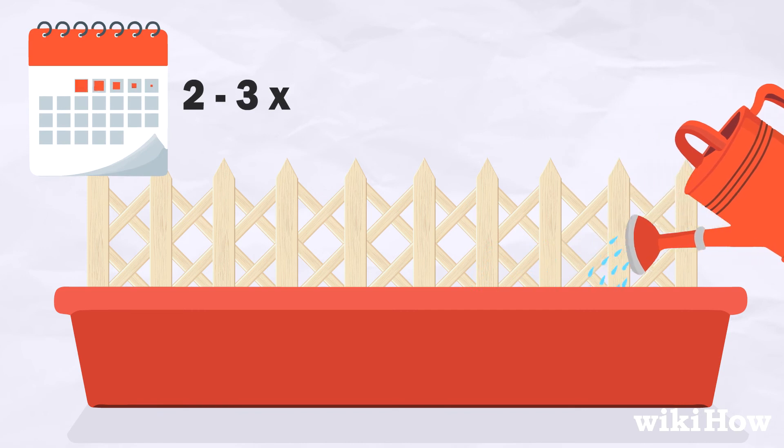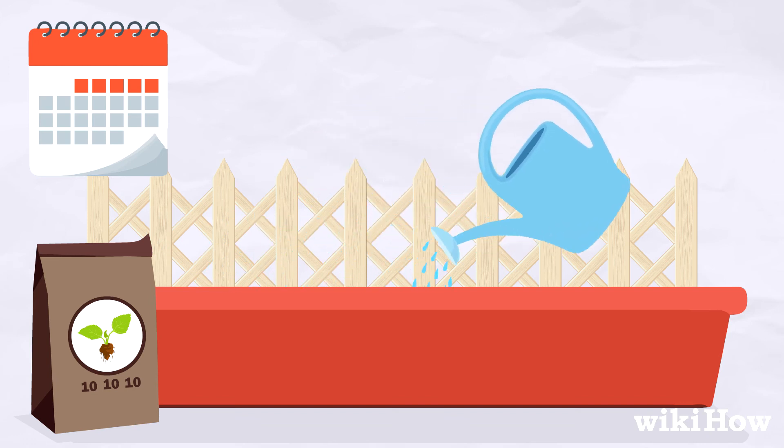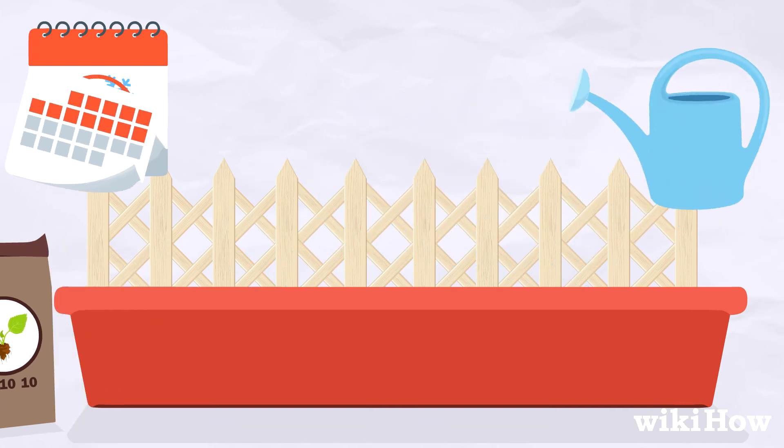Water your plant 2 to 3 times per week so the soil doesn't dry out, and feed it a 10-10-10 fertilizer diluted in water every 1 to 2 weeks, except during the winter.